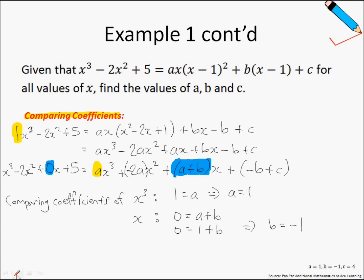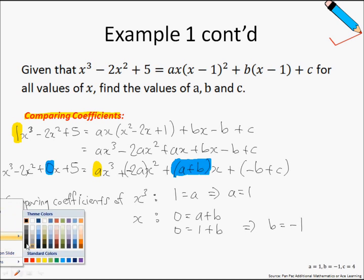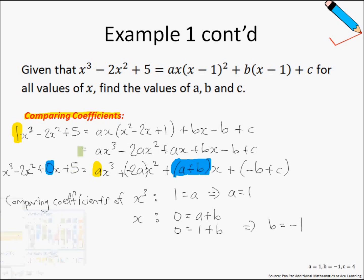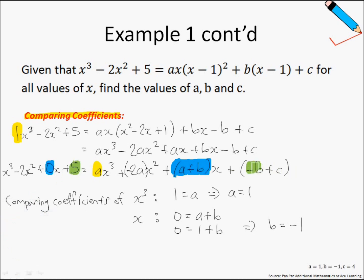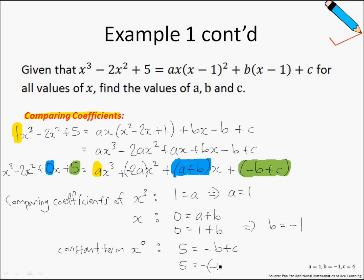Finally, let us compare the coefficient of the constant term. The constant term on the left-hand side is 5. On the right-hand side, the constant term is negative b plus c. So 5 equals negative b plus c. Since b equals negative 1, we have 5 equals negative (negative 1) plus c, which gives c equals 4.